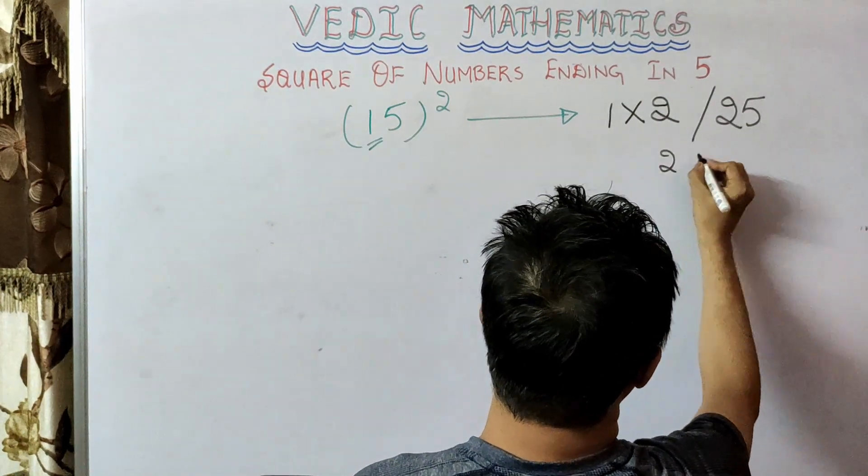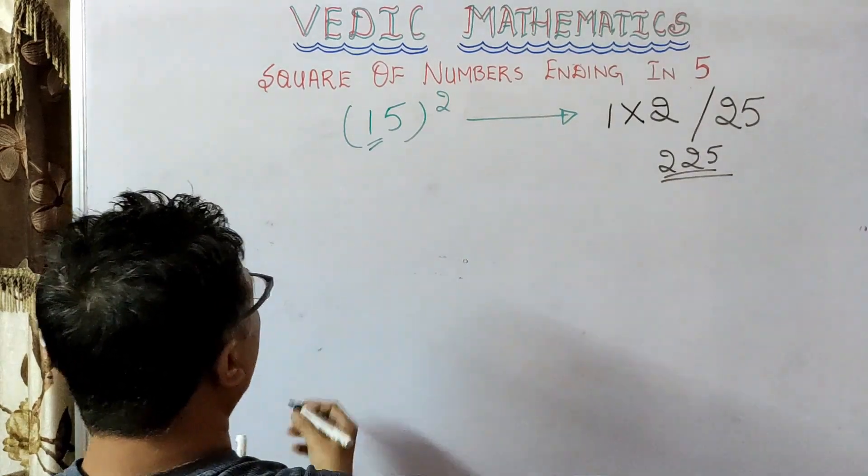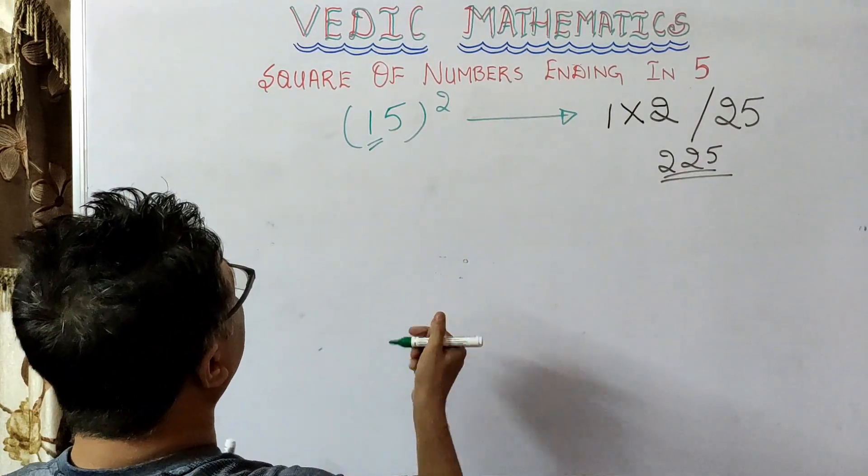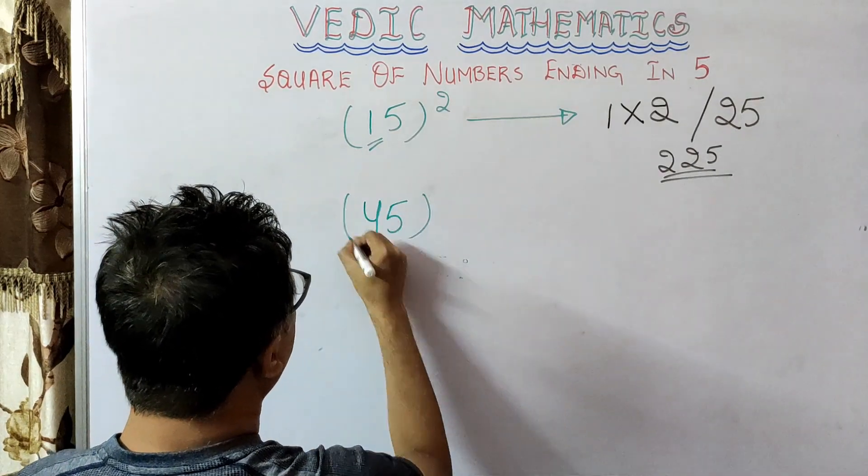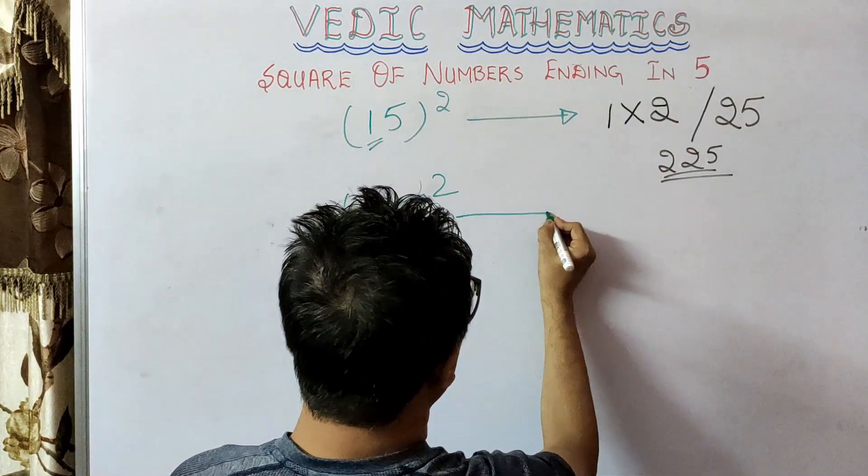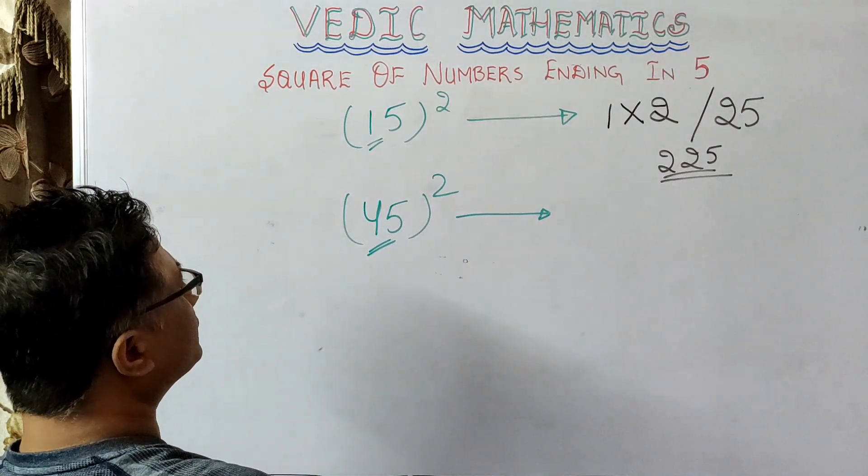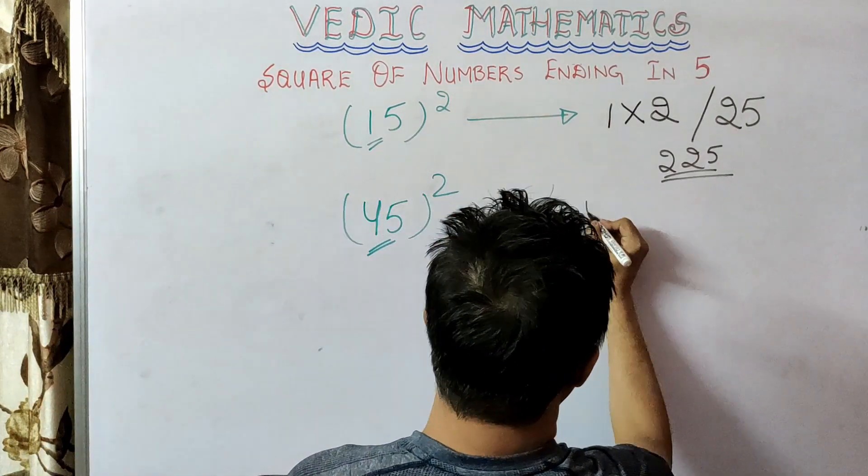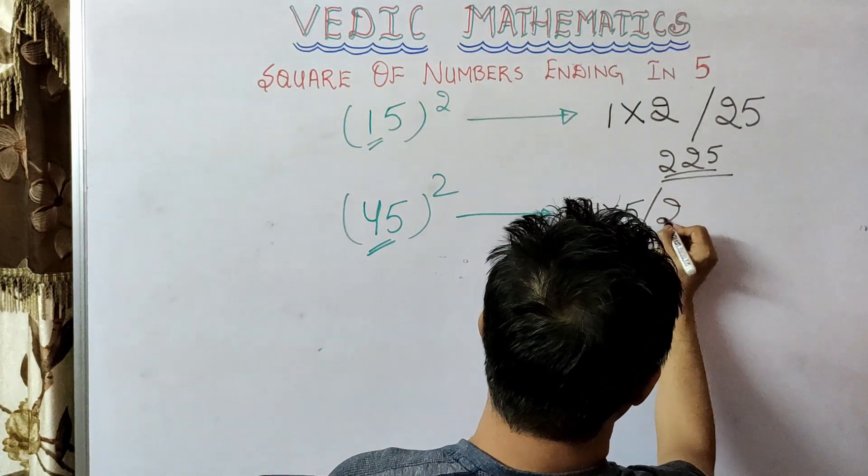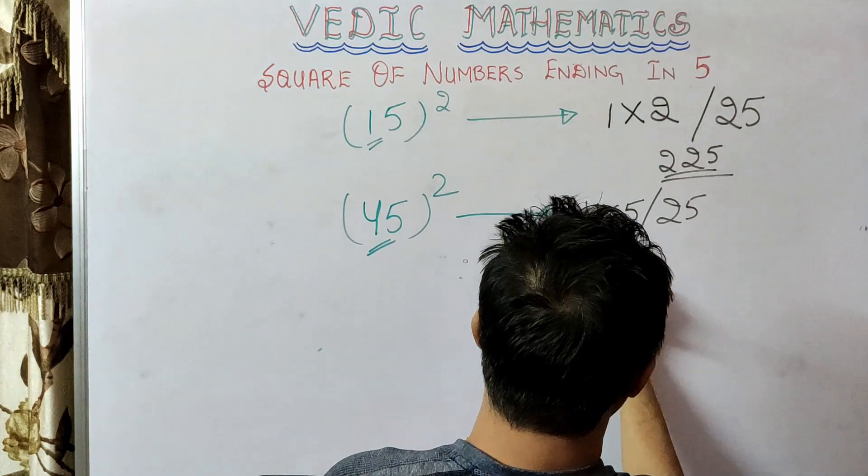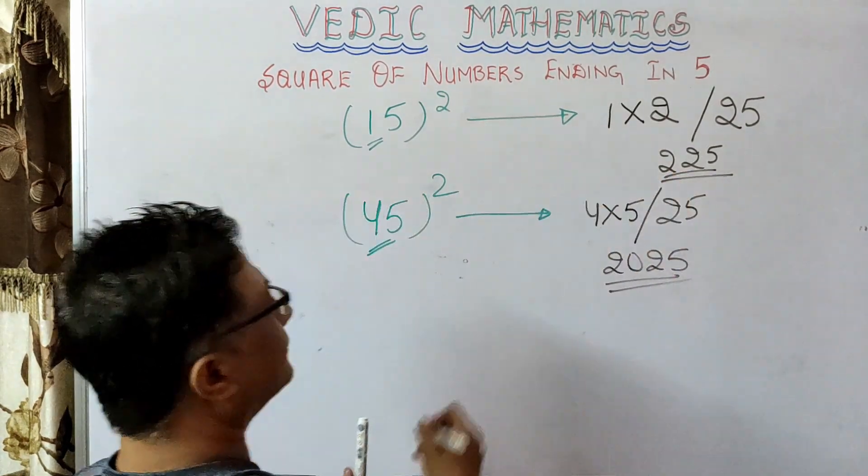225 as the answer. Now suppose you have to calculate 45 square. This is 4, so you have to write 4 multiplied by 5, and then 25. So this is your answer. Now